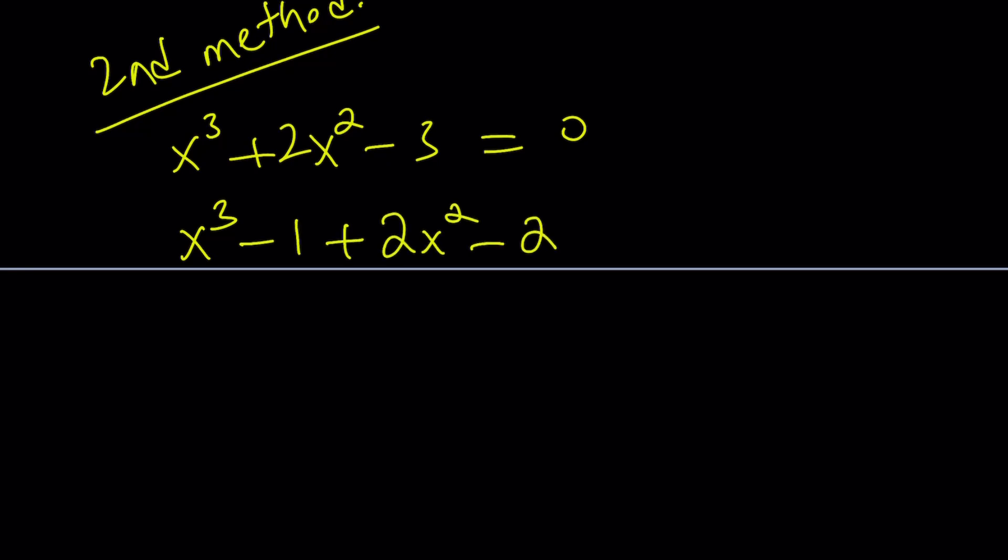So we can kind of write the negative 3 as x cubed minus 1 plus 2x squared minus 2. Again, this doesn't necessarily deal with the fact that x equals 1 is a solution. Even though that might help in the solution of the problem, we didn't necessarily use it. But the idea was basically to take negative 1 so we can pair it up with the x cubed, and then the rest will be negative 2, which matches nicely with 2x squared.